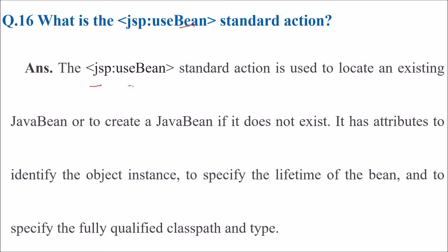This JSP useBean standard action is used to locate an existing JavaBean, or to create a JavaBean if it does not exist. It has attributes to identify the object instance, to specify the lifetime of the bean, and also to specify the fully qualified class path as well as the type.